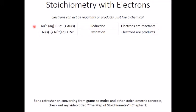Take a look at a reduction. Gold 3+ reacts with three electrons to become gold zero, elemental gold. So in a reduction, electrons are reactants. They combine with some other reactant to produce a product.